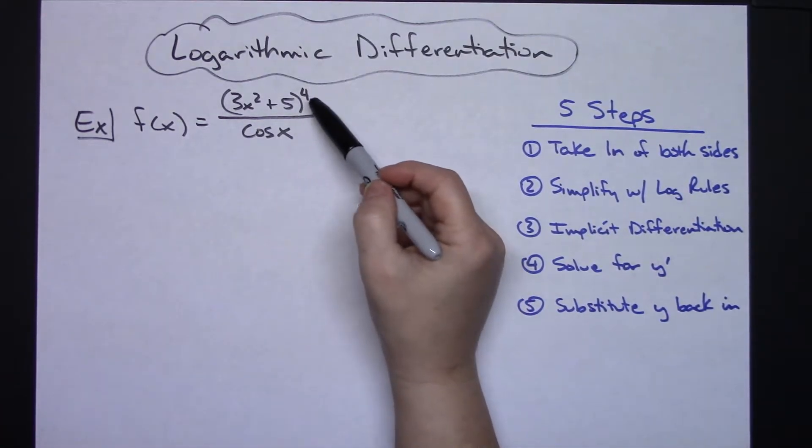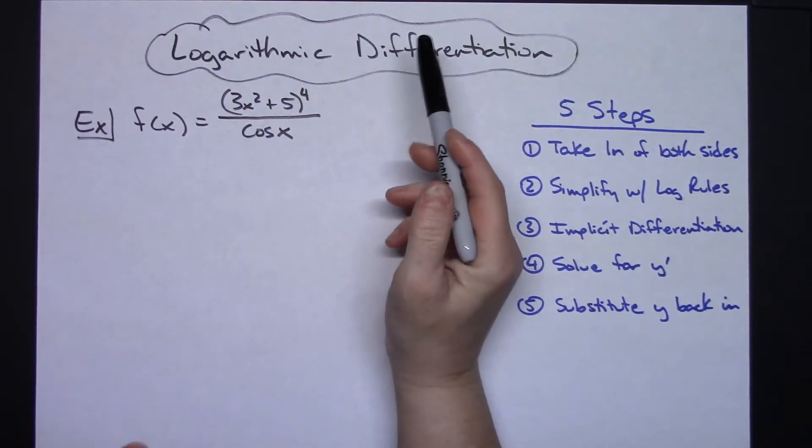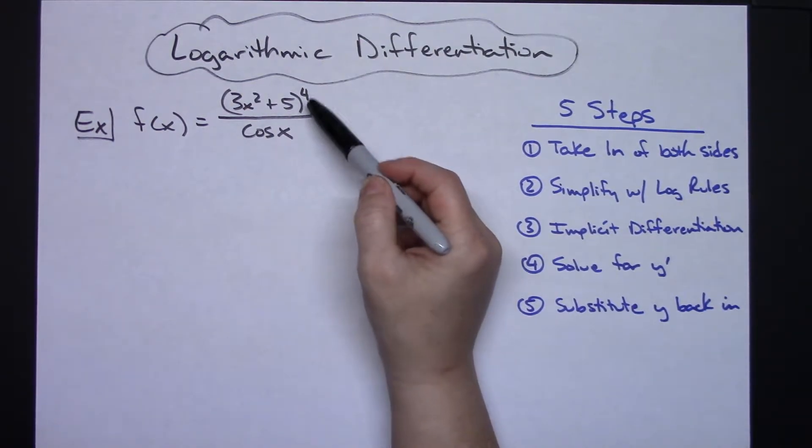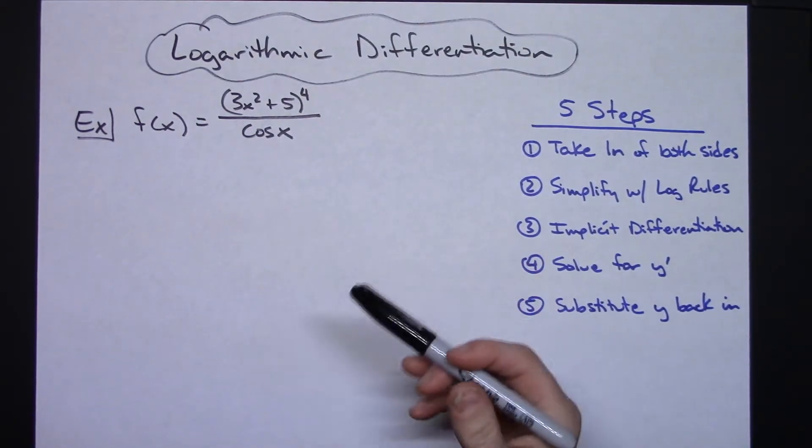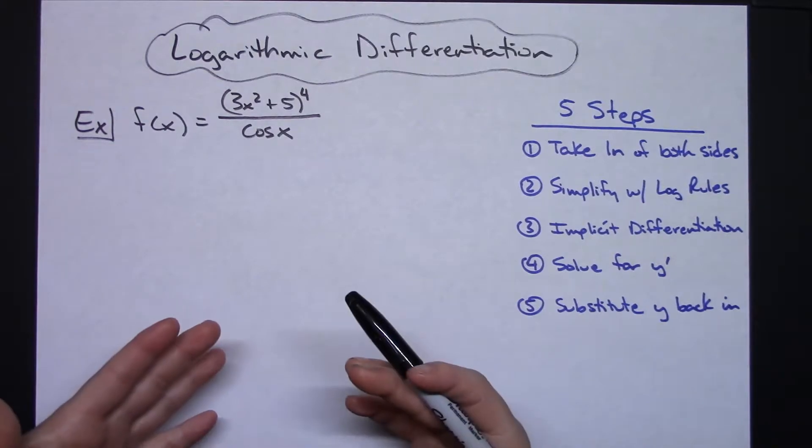Now looking at this particular function right here, technically yes I could do the quotient rule but the quotient rule could end up being a little bit more messy. So you're going to want to apply logarithmic differentiation when it could possibly make it an easier derivative to find.